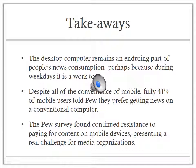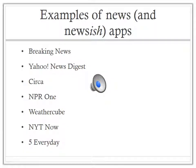Despite the popularity of mobile news, the desktop computer remains a key element of people's news consumption — probably because it's a work-day tool. Despite all the convenience of mobile, fully 41% of mobile users told Pew that they prefer getting news on a conventional computer. The Pew survey also found continued resistance to paying for content on mobile devices, which presents a real challenge for media organizations that need to generate a profit. Finally, here is a list of news apps that offer unique and unusual features — please check out at least three of these apps prior to class on Monday, when we will discuss them.